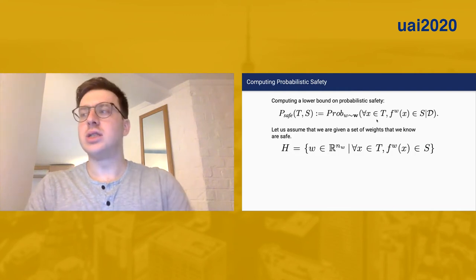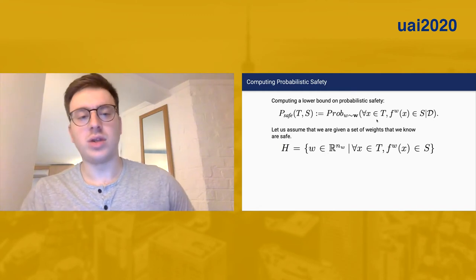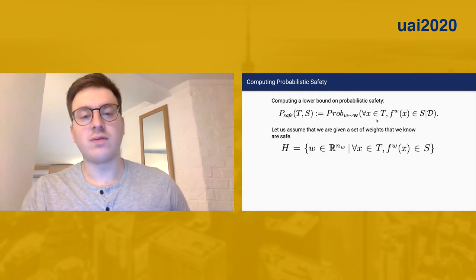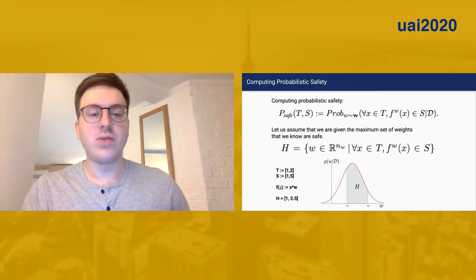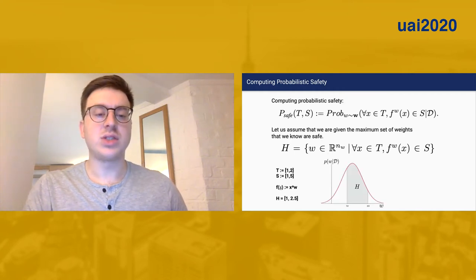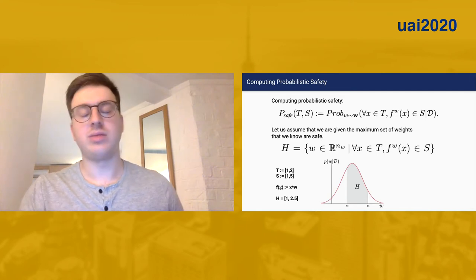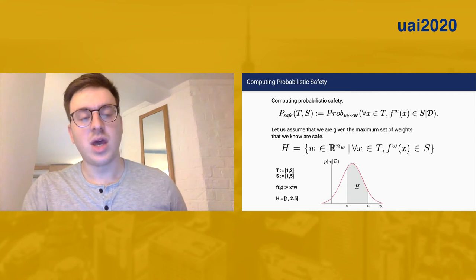A simple way to illustrate how we might go about computing this is by assuming that we have some safe set of weights H and that we know it. To give an example of this, let's assume that our neural network function is simply the product of an input dimension by a simple weight.